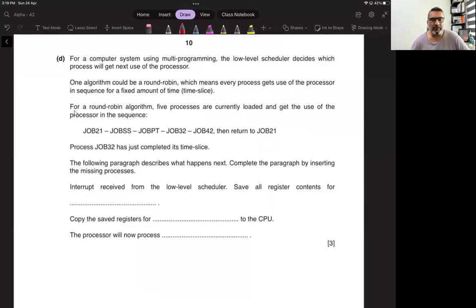For a round robin algorithm, five processes are currently loaded and get the use of the processor in sequence. You have to remember: job 21, then job S, then job PT, then job 32, then job 42, and then return to job 21. Process job 32 has just completed its time slice.